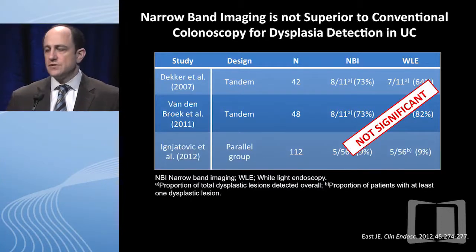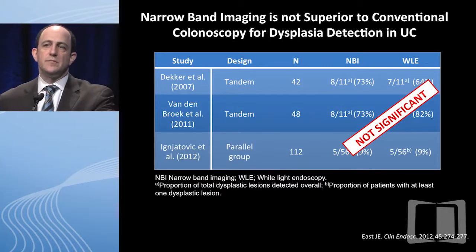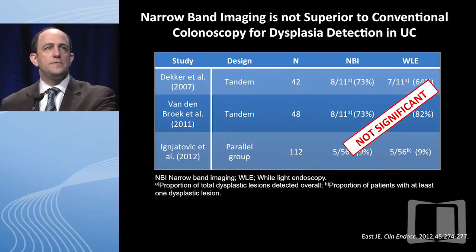A 71 year old man with indeterminate extensive colitis for 10 years in clinical remission had this lesion seen in the sigmoid colon with narrow band imaging. You might be asking why can't we just use narrow band imaging? The lesion was unresectable with high-grade dysplasia and therefore this patient went to surgery and had proctocolectomy. At least with the previous generation of scopes, there have been three studies that compared narrow band to white light in the colitis population and they were not significantly better with narrow band.